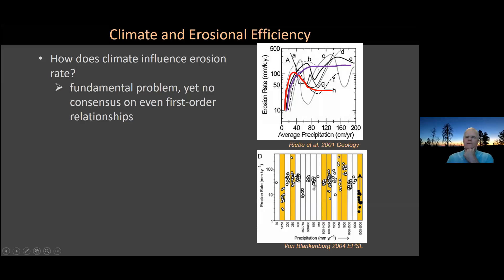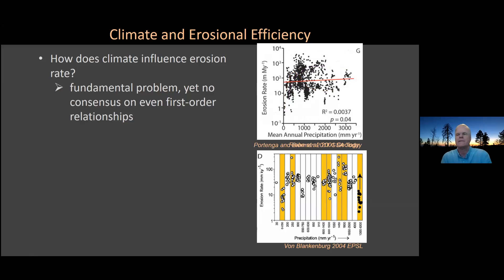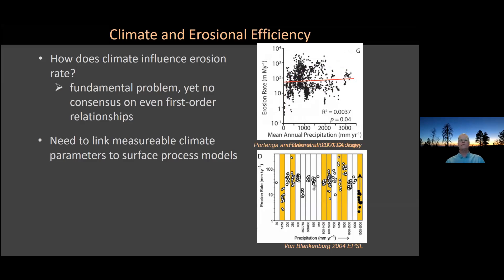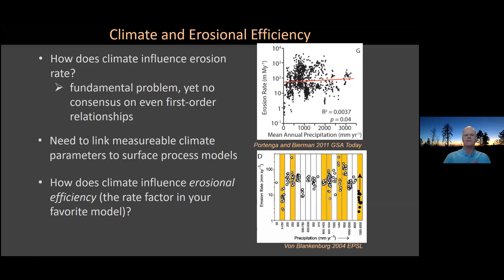Von Blankenberg put together a compilation in 2004 of all the places where cosmogenic data had been collected on erosion rates. Across a huge span of precipitation, it showed no link to climate when looking at erosion rate. I added — highlighted in yellow — each of those places, showing a span of erosion rates linked to ranges and relief in those areas. And Portenga and Beerman in 2011, doing one of the first global compilations, found no detectable link between erosion rate and mean annual precipitation. So what's going on?